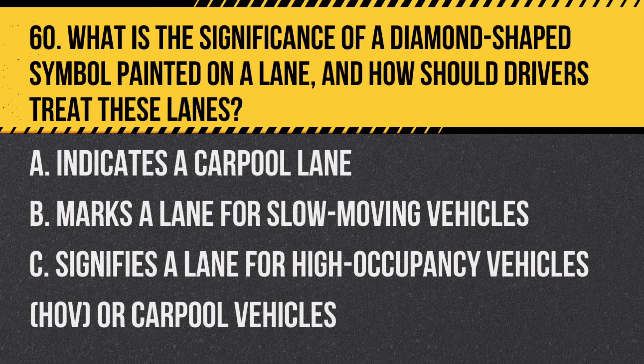Question 60: What is the significance of a diamond-shaped symbol painted on a lane, and how should drivers treat these lanes? A. Indicates a carpool lane. B. Marks a lane for slow-moving vehicles. C. Signifies a lane for high-occupancy vehicles (HOV) or carpool vehicles. Answer: C. A diamond-shaped symbol on a lane indicates that the lane is reserved for HOVs or carpool vehicles.